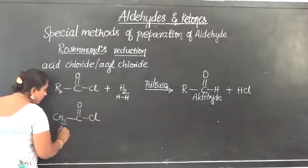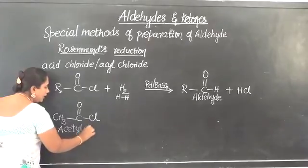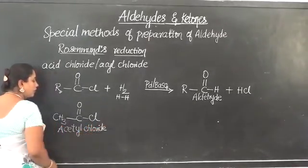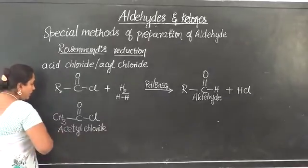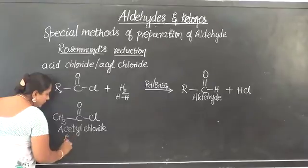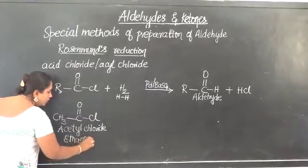So CH3-C=O-Cl. The name of this compound is acetyl chloride. The name of this compound is acetyl chloride according to trivial nomenclature. Because there are two carbons, the name is ethanoyl chloride.